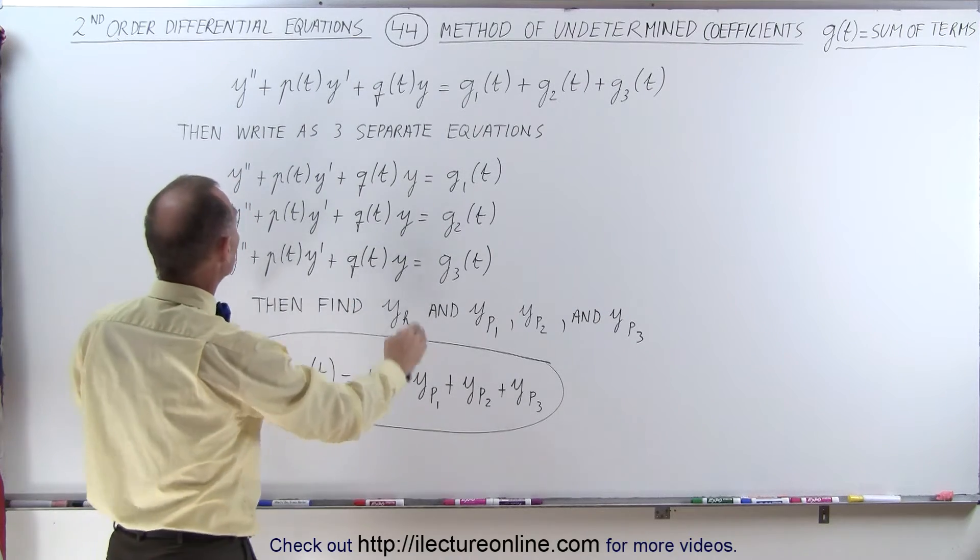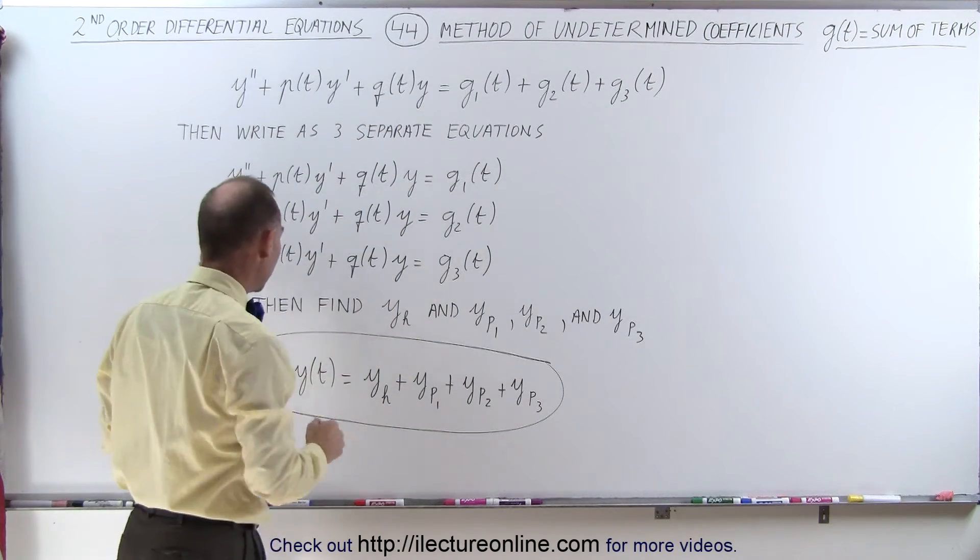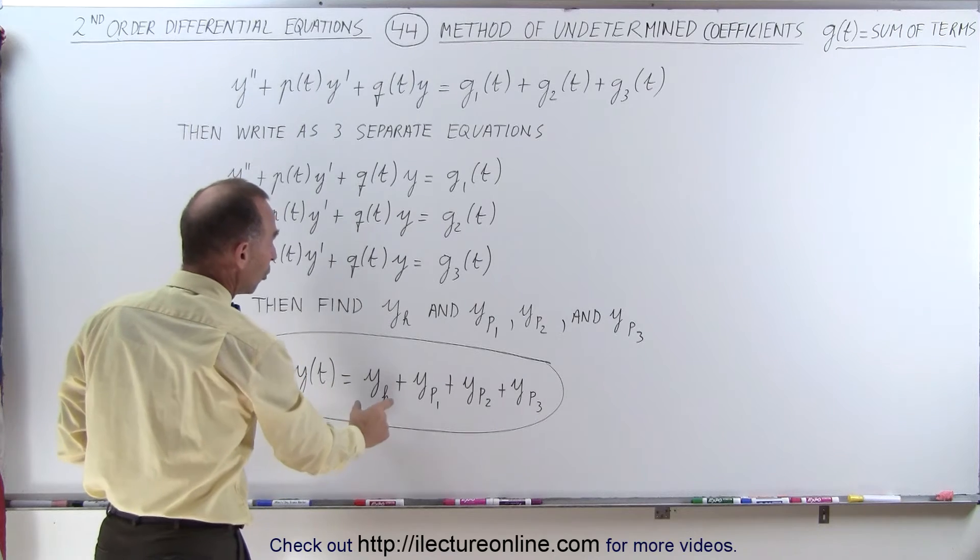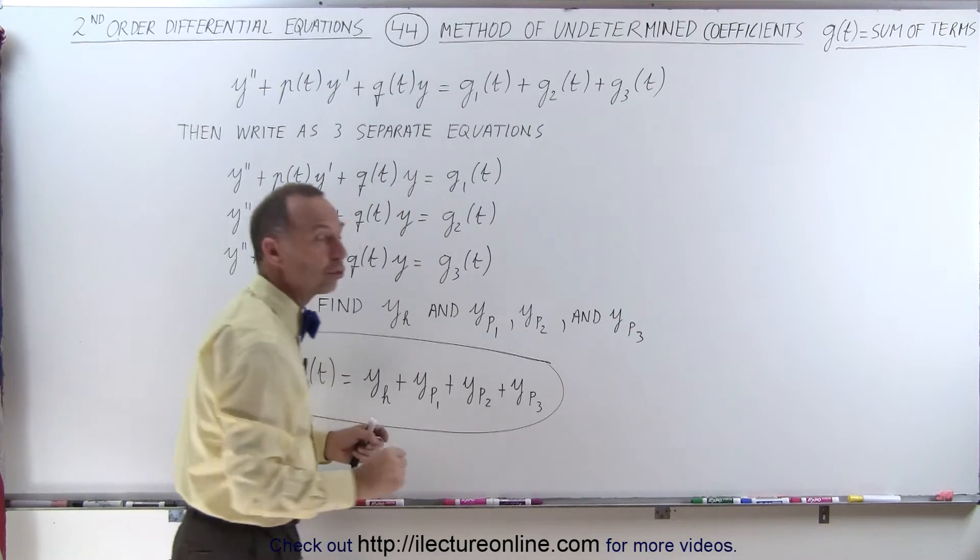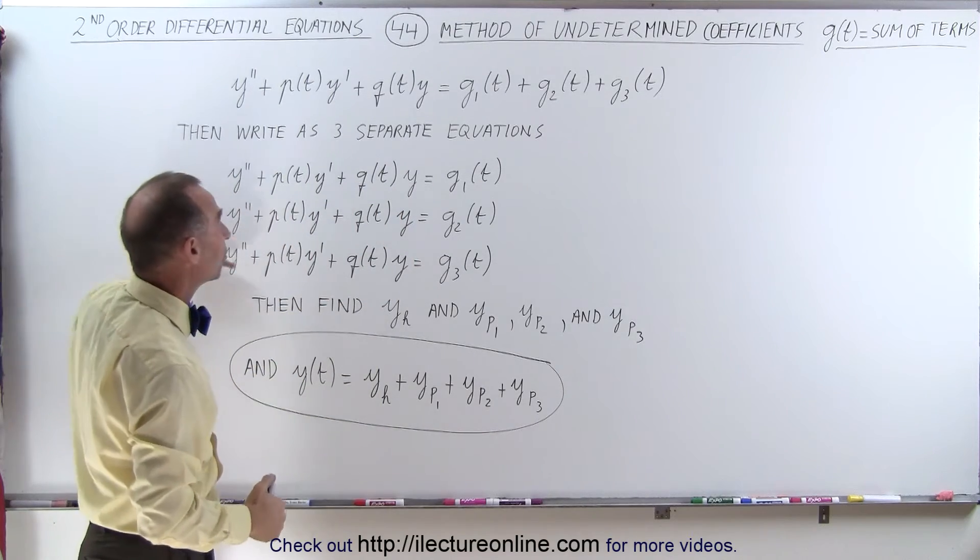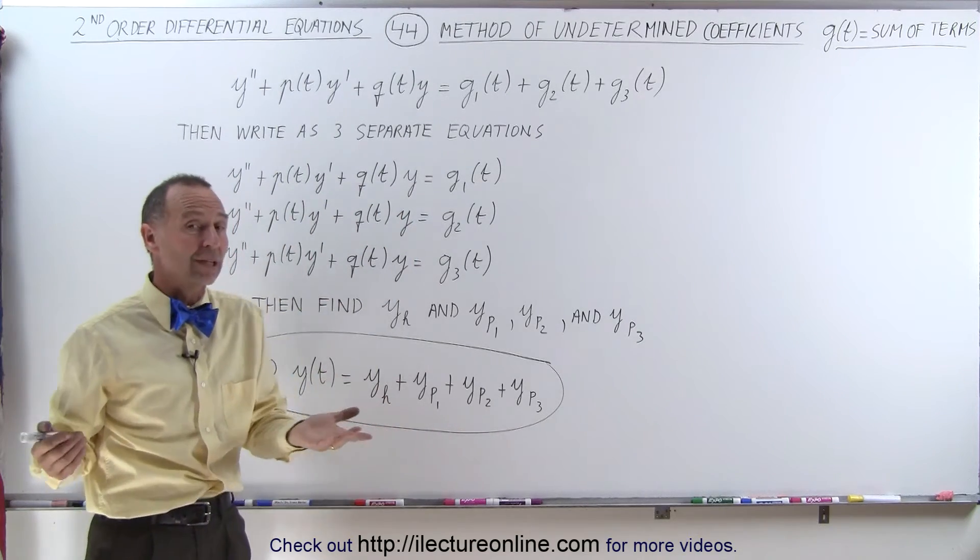Then, to find the total solution of the original differential equation, it's simply going to be the sum of the homogeneous part plus the individual particular solutions of each of these three equations. Looks like a lot of work, and yes, it is,